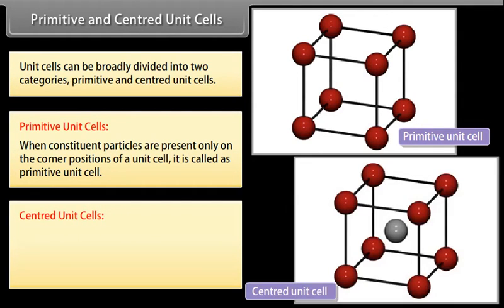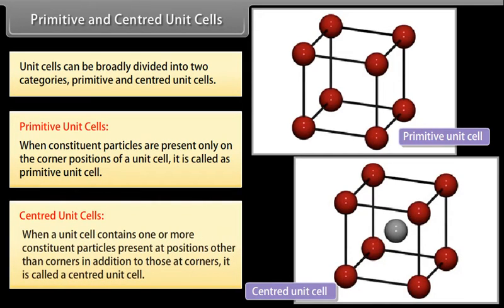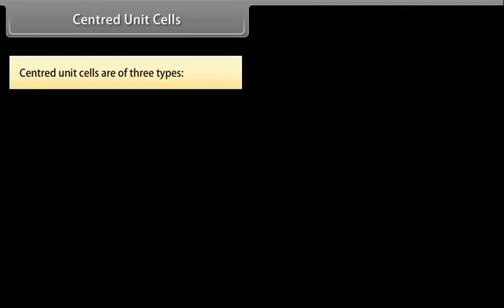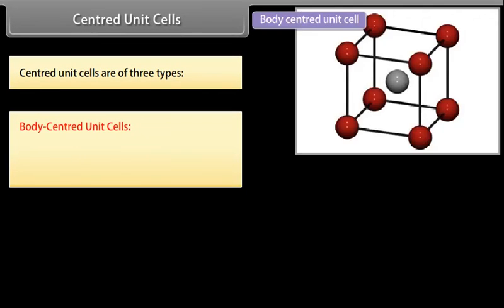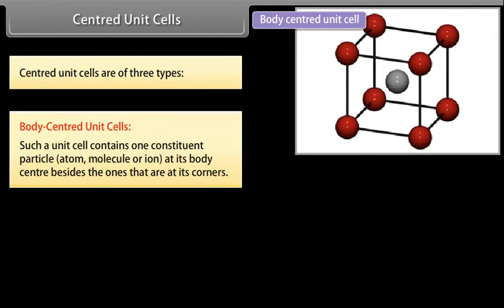Centered Unit Cells: When a unit cell contains one or more constituent particles present at positions other than corners in addition to those at corners, it is called a Centered Unit Cell. Body Centered Unit Cell: Such a unit cell contains one constituent particle, atom, molecule or ion at its body center besides the ones that are at its corners.